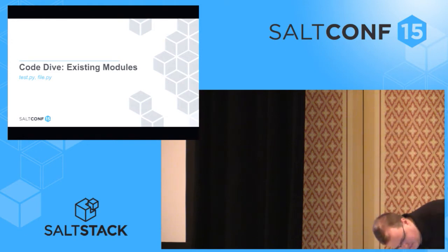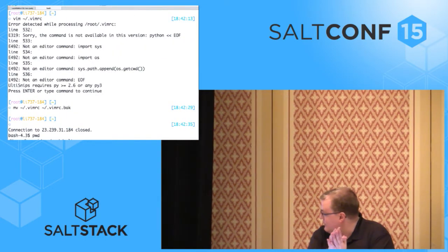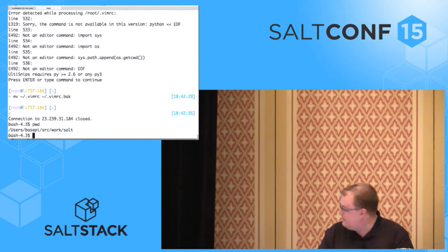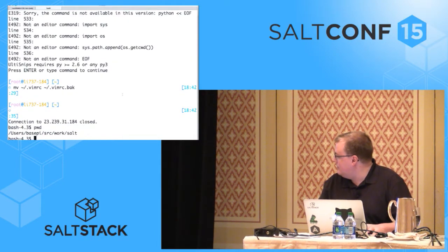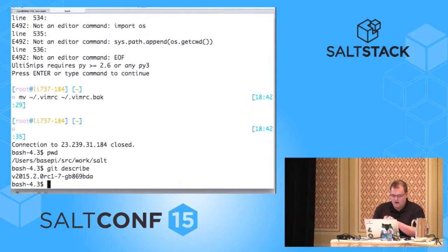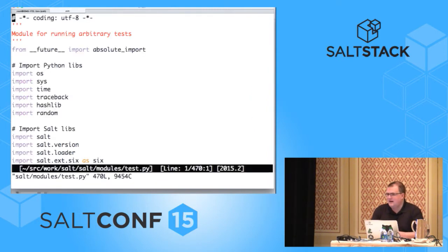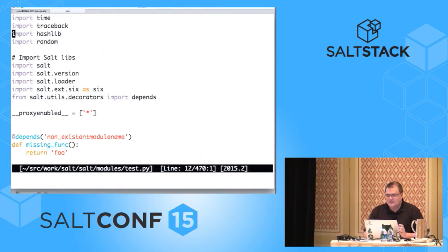Let's look at some existing execution modules. I am just in my local Salt clone. So, we are a few commits after 2015.2.0 RC1. Inside of the Salt repo, all of the existing modules ship inside of salt/modules. Let's check out test.py — this is a module that pretty much everybody who has ever used Salt has run. It has some of the most simple modules in it. If we look for ping, for example, we can see this is a pretty simple function.